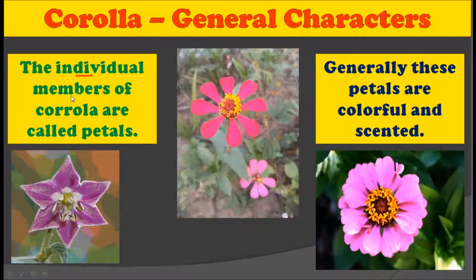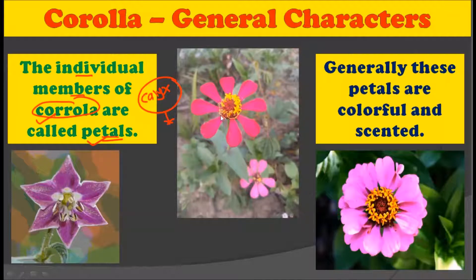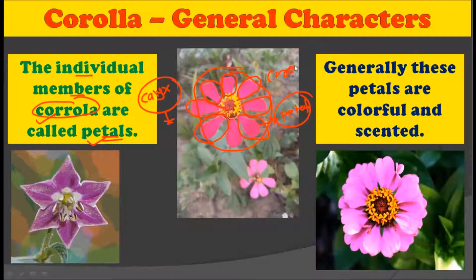The individual members of the corolla are called petals. Just as we studied in the last video — the individual members of the calyx are called sepals — in the very similar way, the individual members of the corolla are called petals. In the picture, you can clearly observe the individual petals of a flower. All these petals together form the corolla.